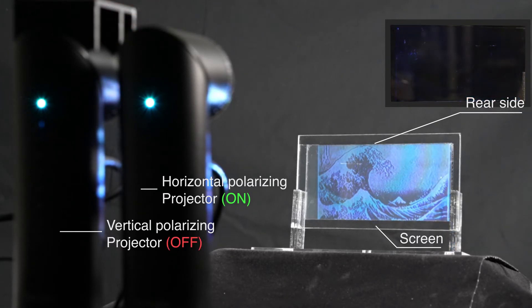First, let's turn off the left projector and operate only the right projector with the horizontal polarization filter. As you see, the image on the rear side of the screen disappeared, but the front side image is still displayed. In other words, the state is the front projection mode.